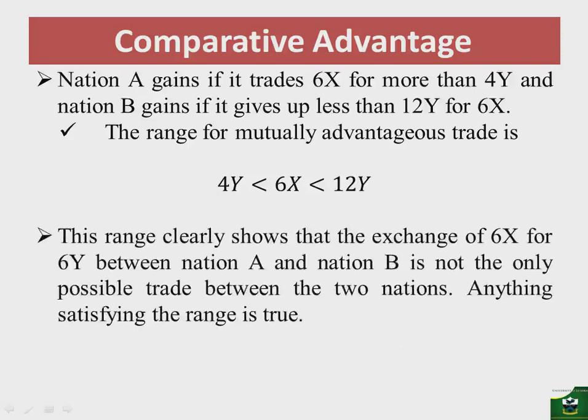This range clearly shows that the exchange of 6X for 6Y between nation A and nation B is not the only possible trade between the two nations. Anything satisfying the range is valid — nation A can decide to exchange 6X for 5Y, or any other amount within the range.